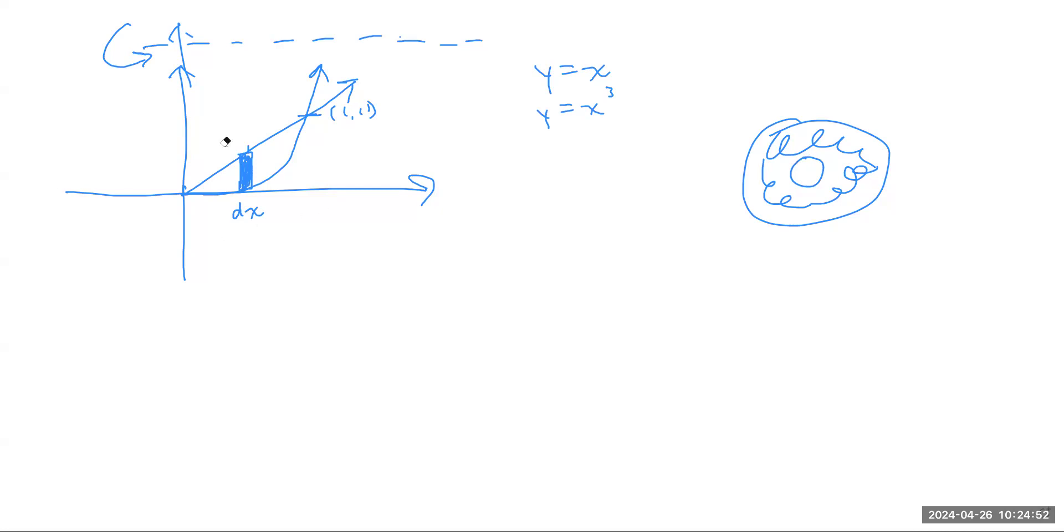What if instead I did this as a dy rectangle? If I revolve that thing around y equals 2, what am I going to be left with? That's a cylindrical shell. So basically it's a little difference between this and this right here.